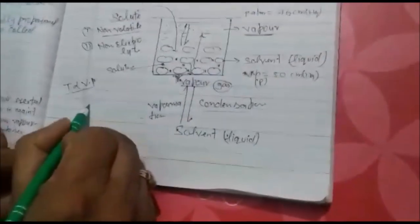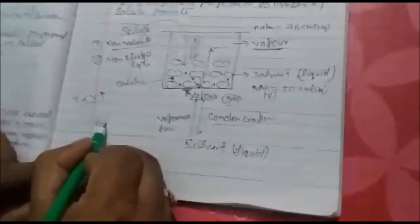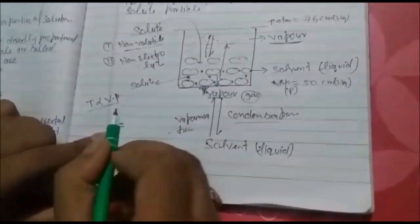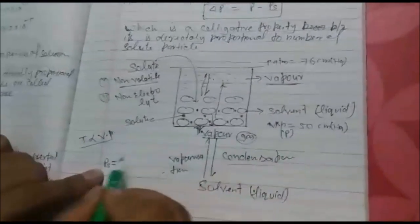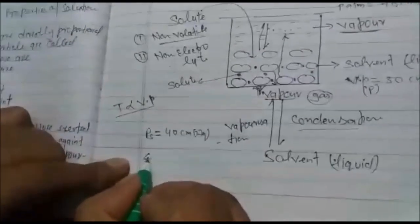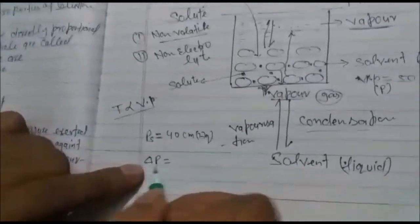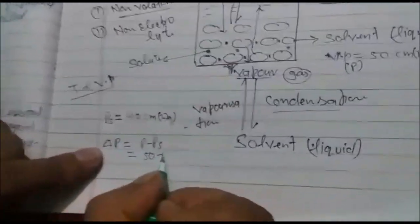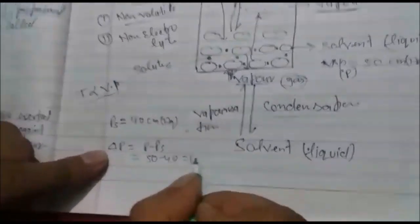Let PS is vapor pressure of solution. Why solution? Because you put solute into solvent, now it becomes solution. PS is always less than P, that is 40 cm Hg. Then lowering in vapor pressure, lowering in vapor pressure P minus PS, this equal to 50 minus 40 equal to 10.